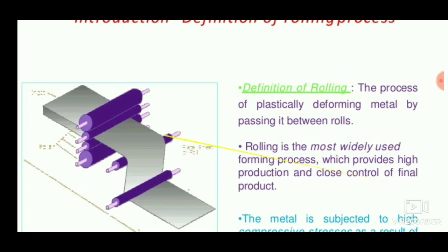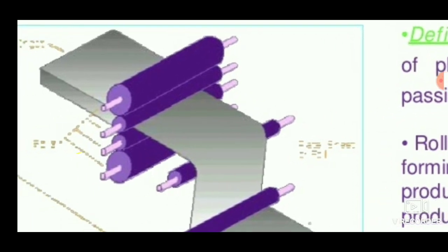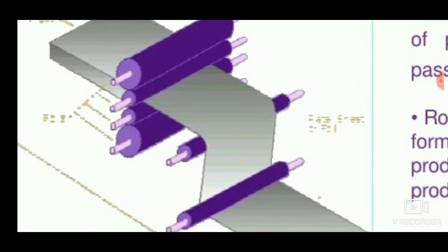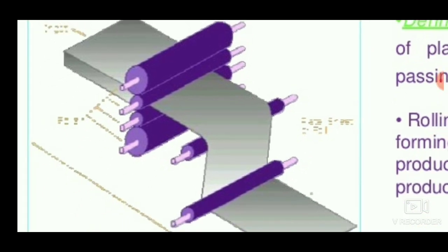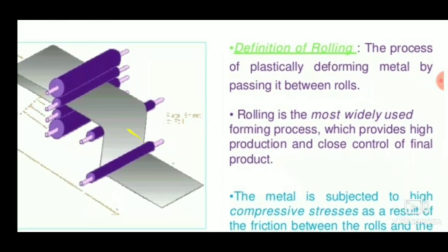The definition of rolling is that it is the process of plastically deforming the metal by passing it between the rolls. The rolls are rotating continuously, applying compressive force on the cast metal. A block of metal is fed into the roll and it turns into a fine sheet. Different rollers are used in this process.